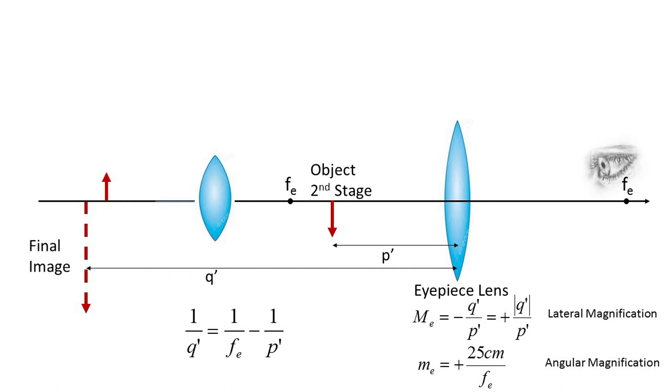Microscopic images are generally seen inverted. Another way to estimate the magnification of the second stage is with the simple magnifier angular magnification of 25 cm divided by Fe for a relaxed eye, where 25 cm is the assumed normal near point of an eye.